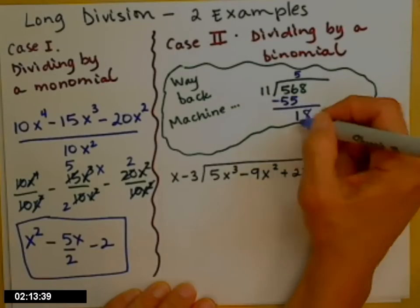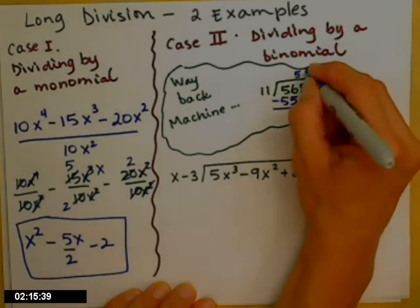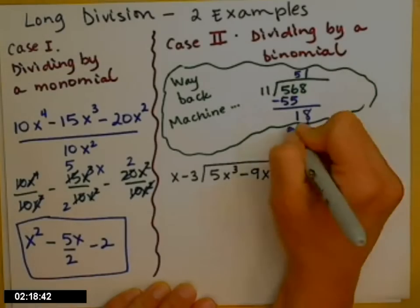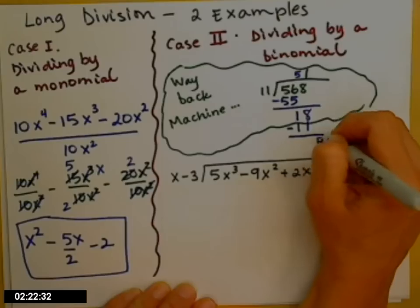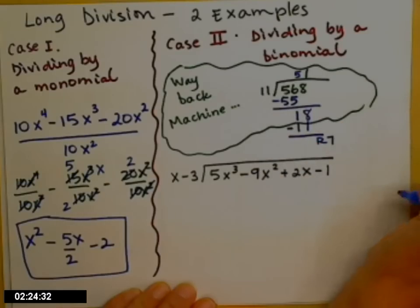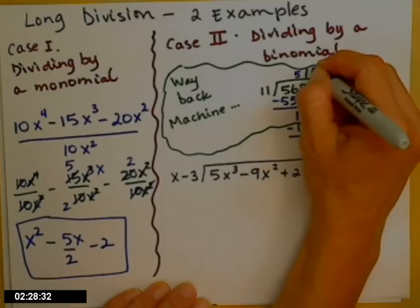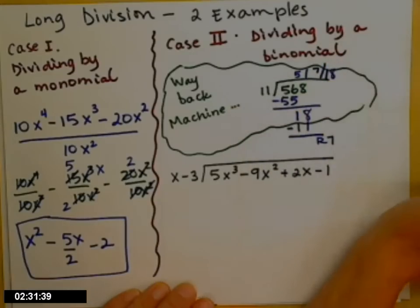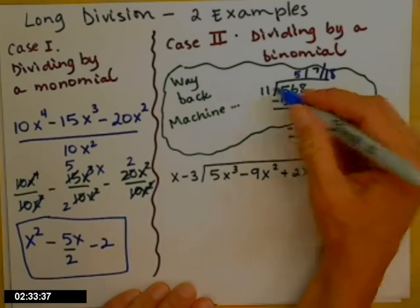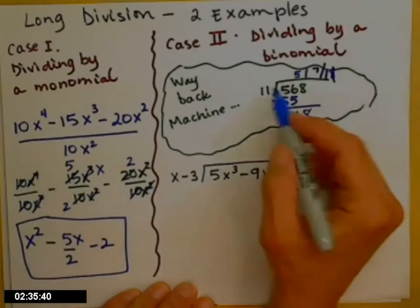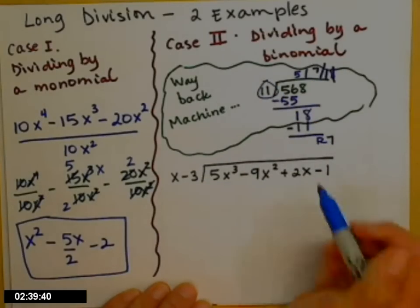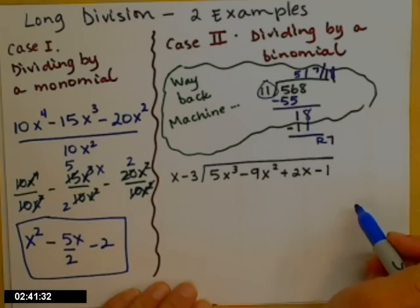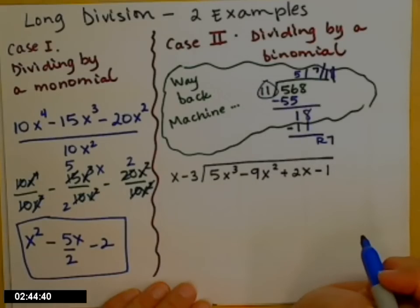Then repeat — 11 times what to get close to 18? You tell me 1, do the multiplying, subtract, and get a remainder of 7. You might have been told that is 7 over 11 — that's the remainder over whatever number was out in front. We're going to use that same idea with a little tweaking when we have polynomials.